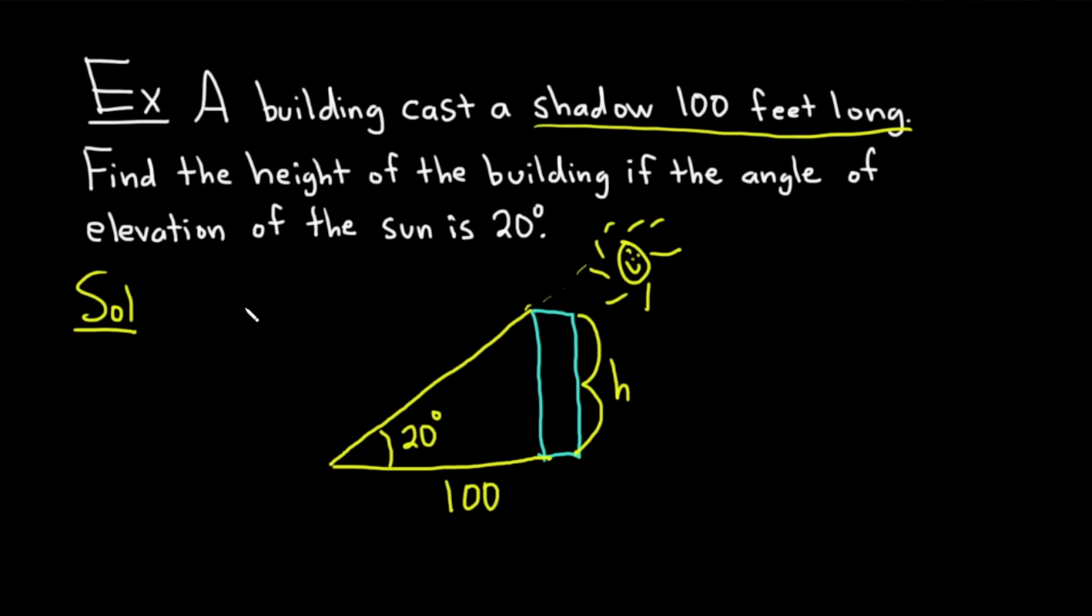We have to think about SOH CAH TOA, because that's helpful. And we have to think about what we have. We have the opposite and we have the adjacent. So that means we're going to use tangent. So the tangent of 20 degrees is equal to opposite over adjacent. So H over 100.